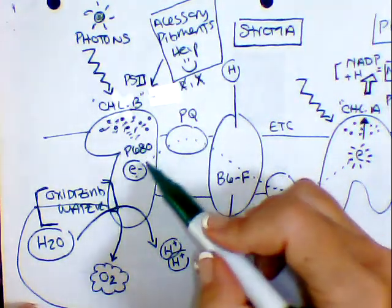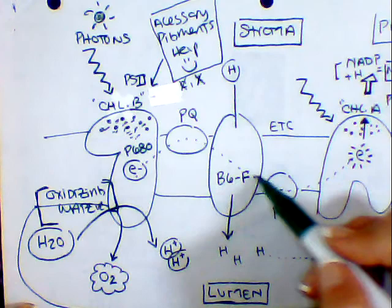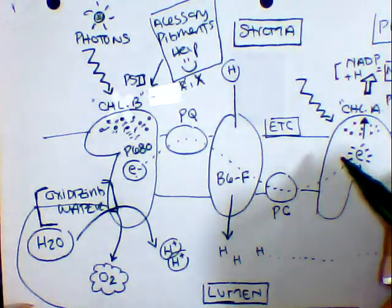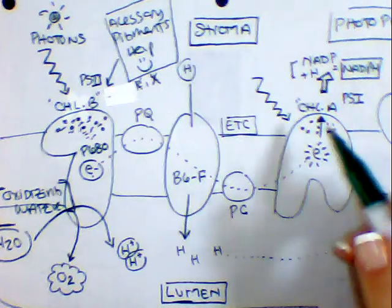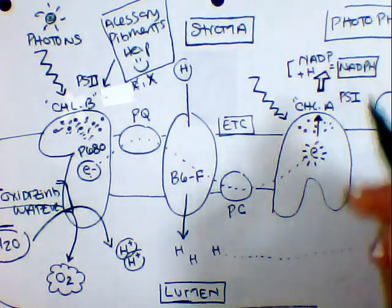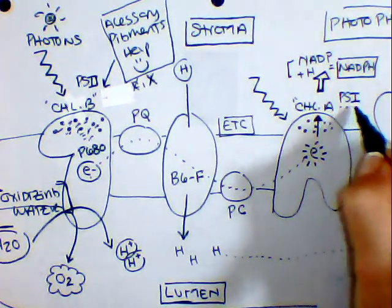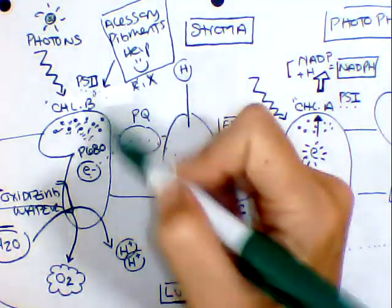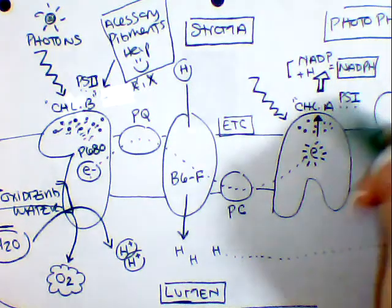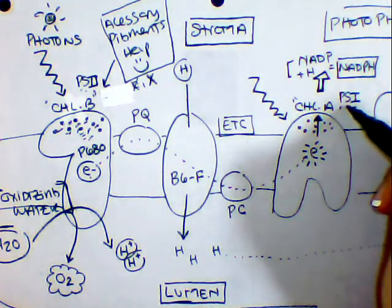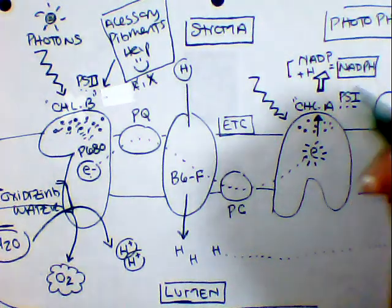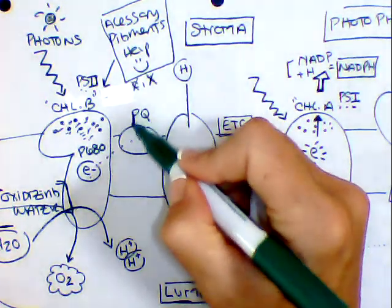All right, now our electrons are going to journey through what's known as our ETC, our electron transport chain, until it goes to our chlorophyll A protein, which is known as your photosystem 1. Remember photosystem 2 was discovered first, that's the name of this big guy, and photosystem 1 was discovered second, and that's the second protein here.